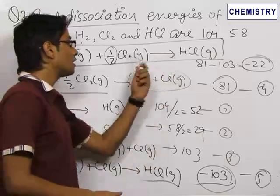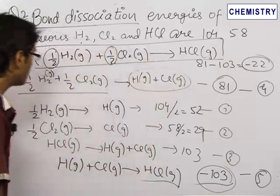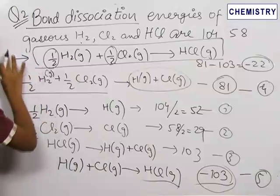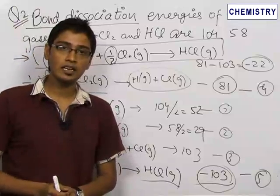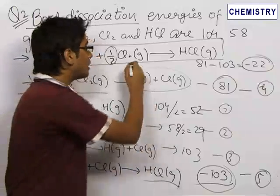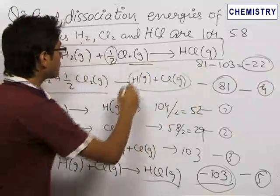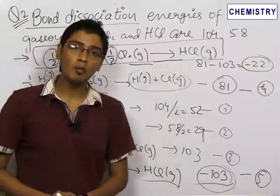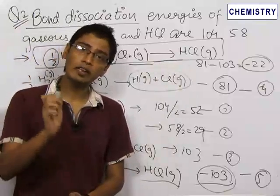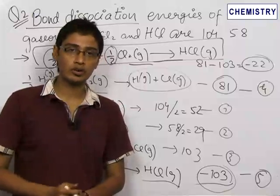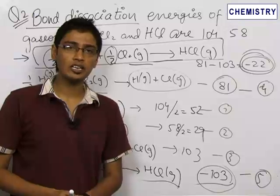So the final answer is −22 kcal/mol as the heat of formation of HCl gas. In this question we learned two things: first, to find the heat of formation or any enthalpy, we break the reaction into simpler reactions and add or subtract their enthalpies to get the net result; second, the enthalpy of formation of any compound is the enthalpy of the reaction in which one mole of the compound is formed from its constituents. This question appeared in JEE a few years back.